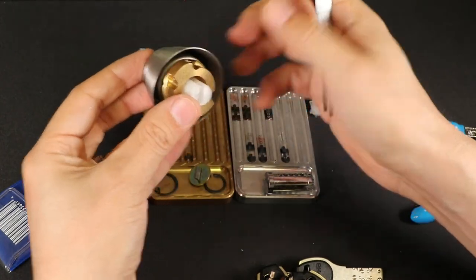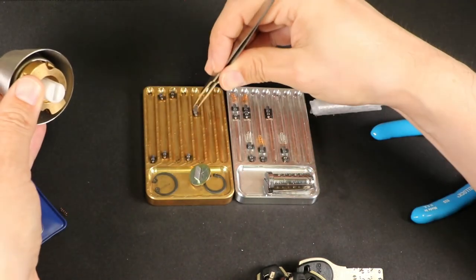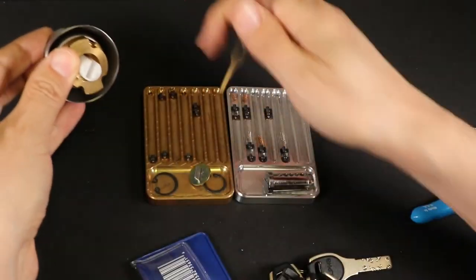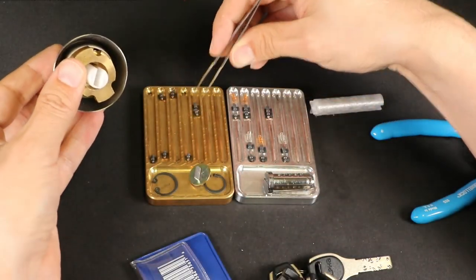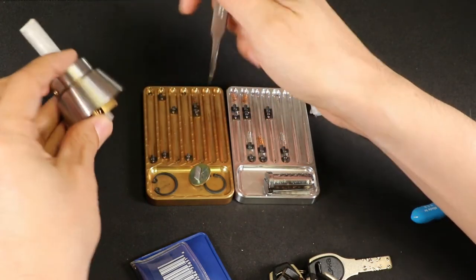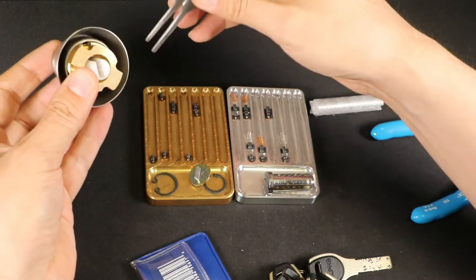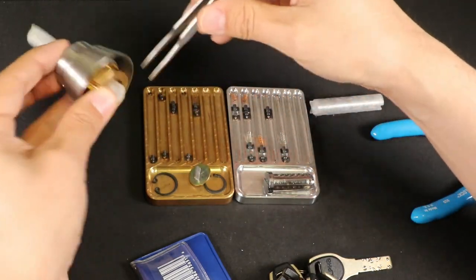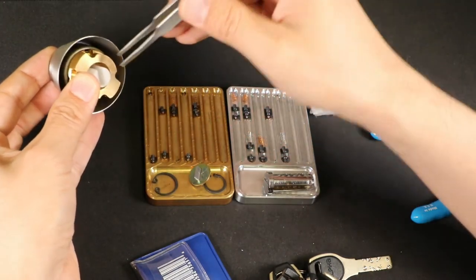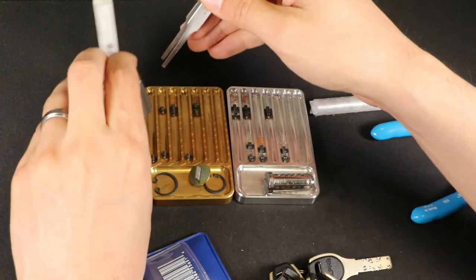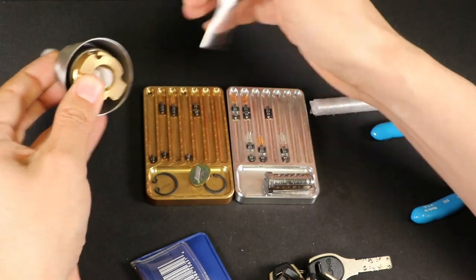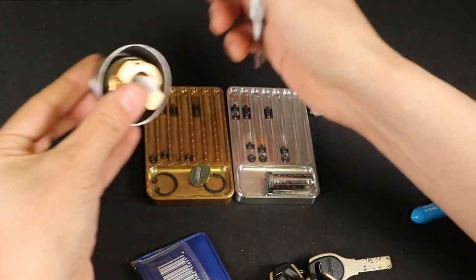All right. Top left. Pin five. Mushroom spool guy. And... Copper colored spring. And then pin number two. Another one of those. And... Come on. Copper colored spring. And pin one. Another one of those. And a copper colored spring. All right.